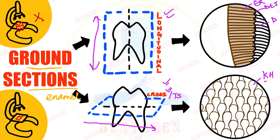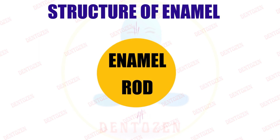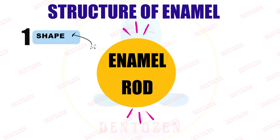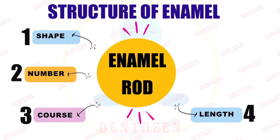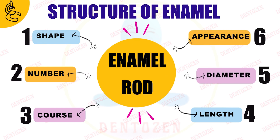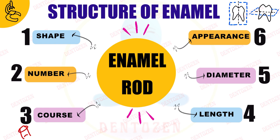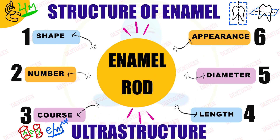Enamel rods in cross section can give different appearances, one of which resembles a keyhole — known as keyhole outline. The structure of enamel mainly revolves around enamel rods, so we should know their shape, number, course, length, diameter, and appearance in longitudinal and cross sections. Some structures, like the orientation of hydroxyapatite crystals within the rods and interrod enamel, cannot be studied in the light microscope due to its limited resolution, so they are studied with the electron microscope — known as the ultrastructure of enamel.